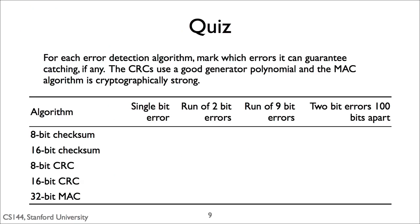Let's go over the answers. Both checksums can detect a single bit error — this is one of the errors a checksum guarantees detecting. Both CRCs can also detect a single bit error. A MAC can't guarantee that it'll detect a single bit error; for security reasons, it could be that the new MAC is the same as the old one. In fact, a MAC can't guarantee detecting any errors, so we can mark no for all the columns for the message authentication code.